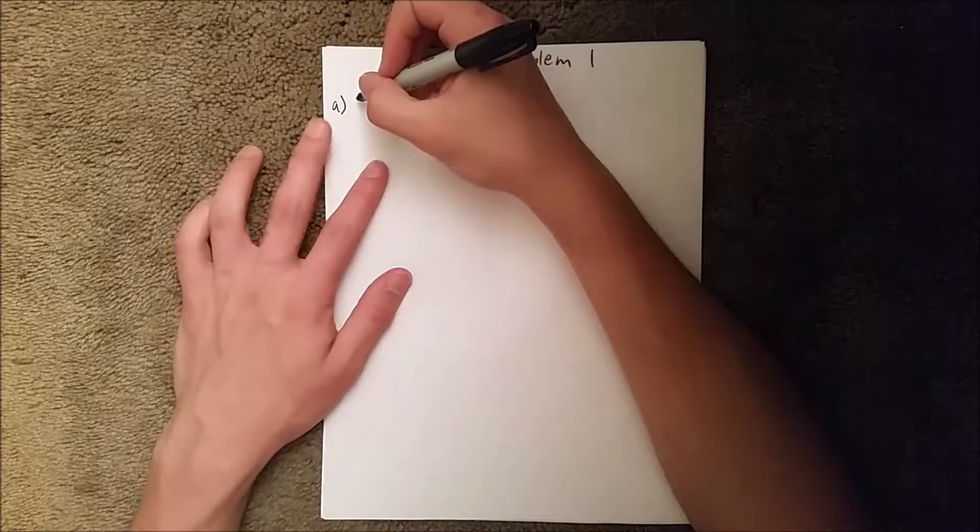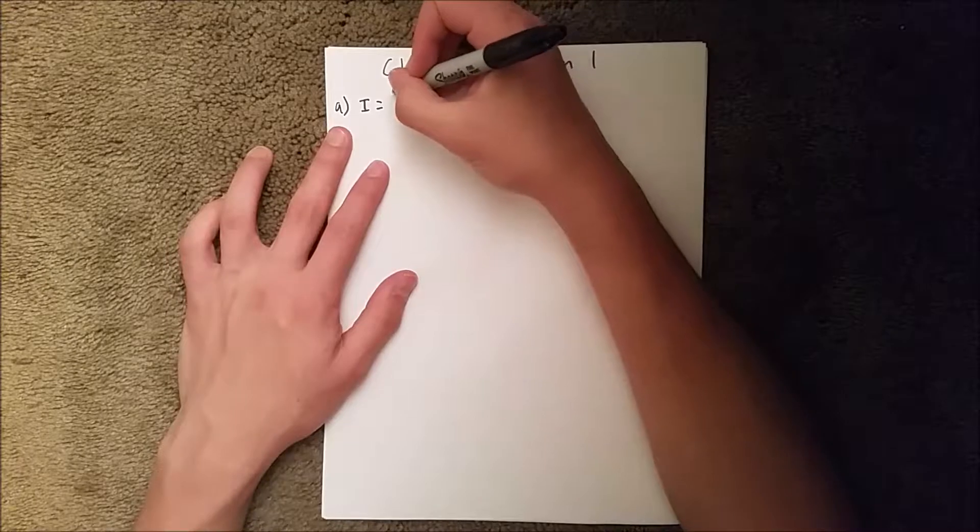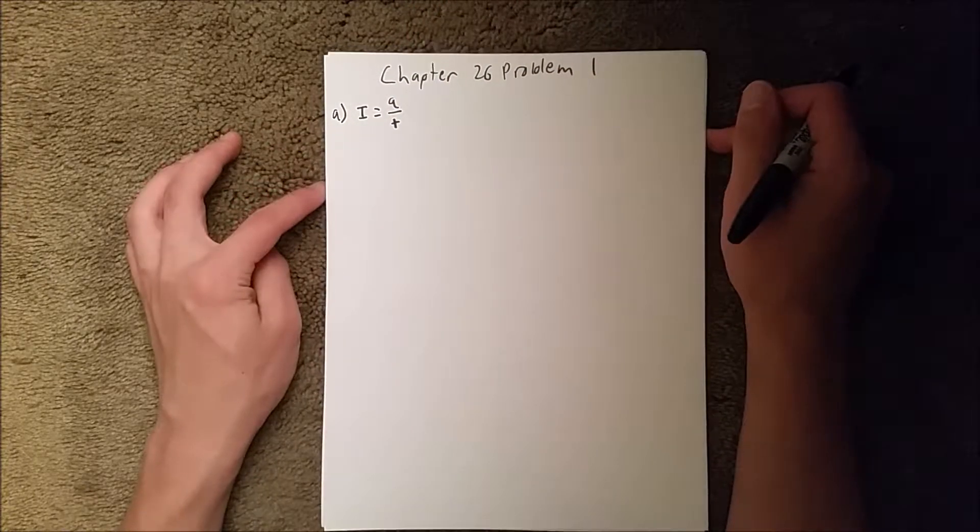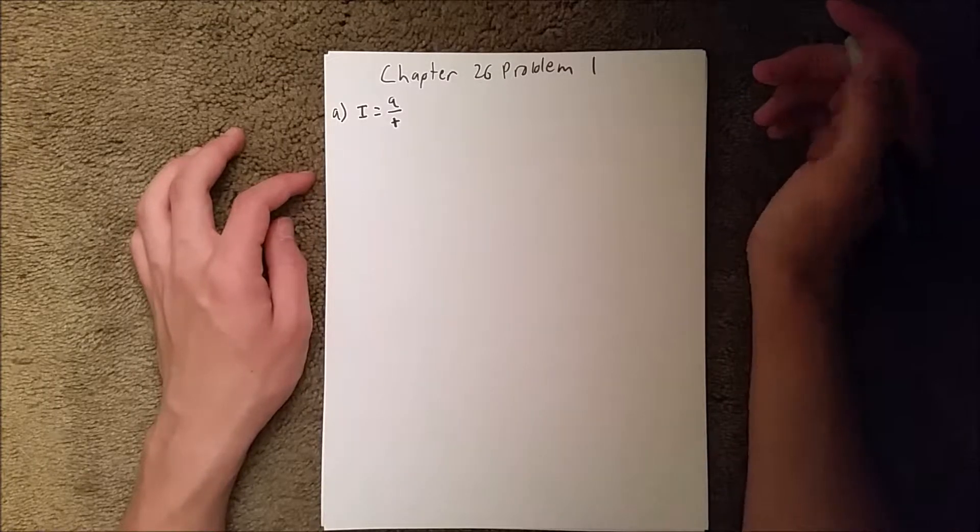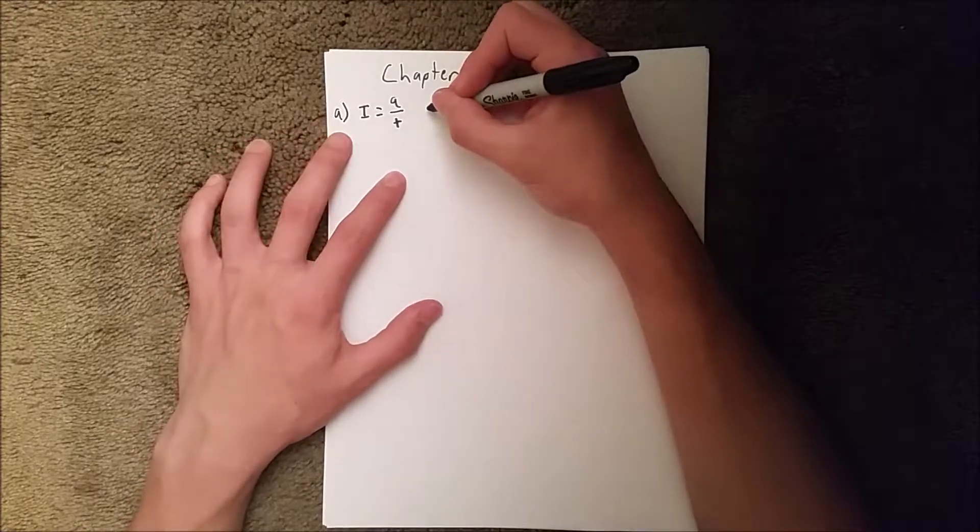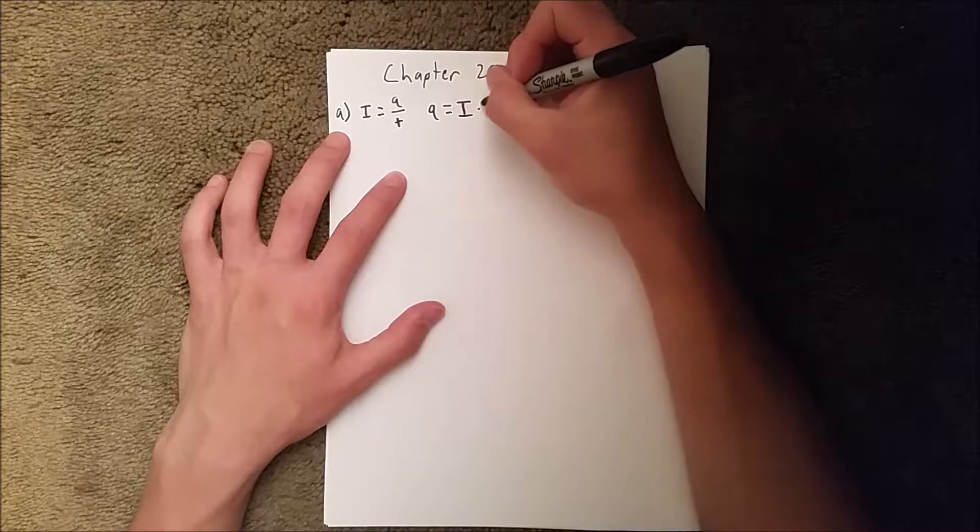We know that current, or I, is equal to charge per unit time. We are looking for how many coulombs, so really it's asking what the charge is. We can rearrange that to charge equals current times time.